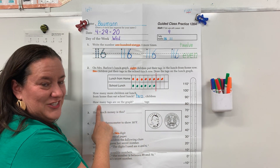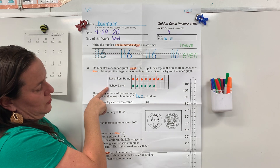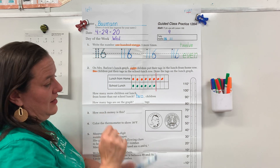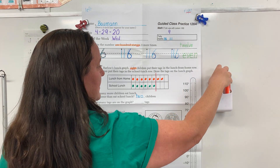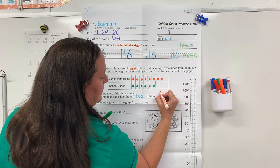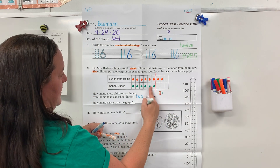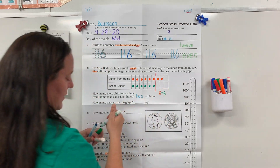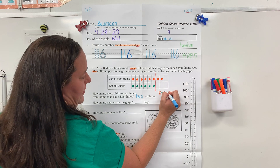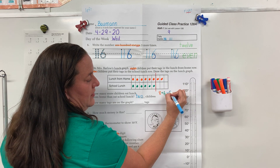We've got a challenge question again. How many tags are on the graph? We don't want to know just lunch from home or school lunch — we want to know how many tags are on the graph total. So we're adding. We had 8 kids bring their lunch plus 6 kids got school lunch. Go ahead and write that problem and solve it, then write your number answer. You should have said 14.